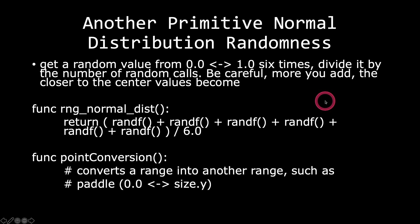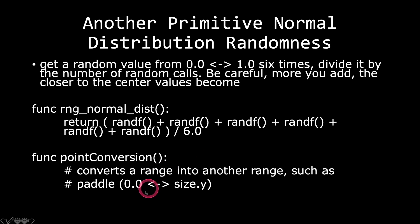Be careful, because the more calls you add, the closer to the center the values become. You can see that we are returning the addition of random float values six times and then dividing by six. It is again the caller's job to convert that value between zero and the size on the Y axis.